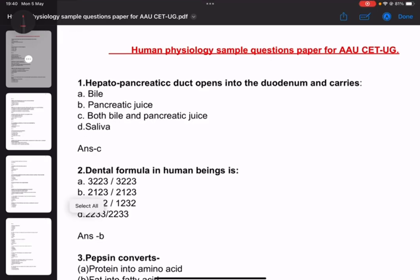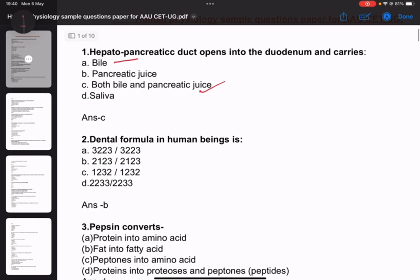Starting with question number one: Hepatopancreatic duct opens into the duodenum and carries - the answer is C, both bile and pancreatic juice. Question two: Dental formula in human beings - the answer is B, 2123/2123.